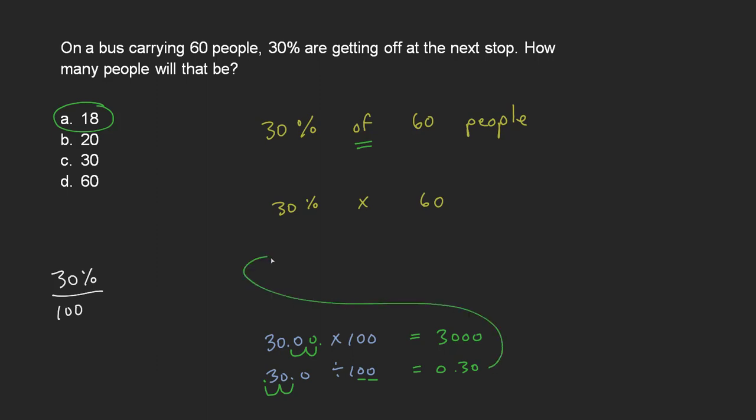So this goes back into our equation. This is 0.3 times 60. And now we can finish this off. 0.3 times 60. I'm going to do 3 times 0 is 0, 3 times 6 is 18.